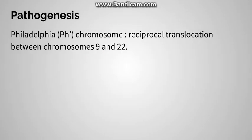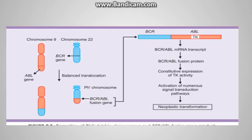Going to the pathogenesis: a very characteristic cytogenetic abnormality seen is known as the Philadelphia chromosome. It is a reciprocal translocation between chromosome number 9 and chromosome number 22. On chromosome 9 there is a gene known as the ABL gene, and on chromosome 22 there is a gene known as the BCR gene, which stands for breakpoint cluster region. This reciprocal translocation leads to formation of a fusion gene known as the BCR-ABL gene, and the resulting chromosome is known as the Philadelphia chromosome. This fusion gene is responsible for CML.